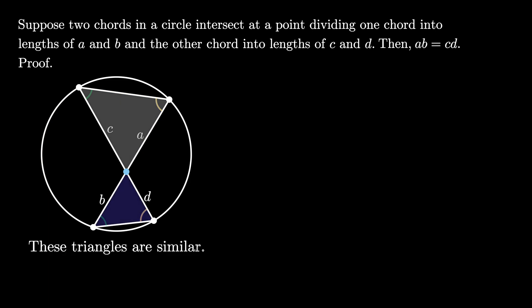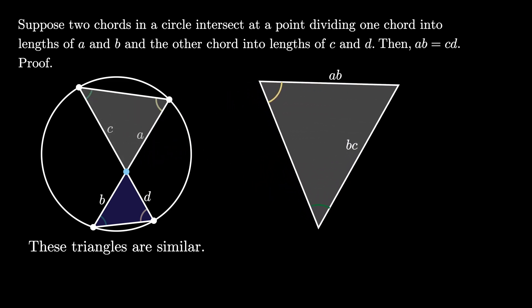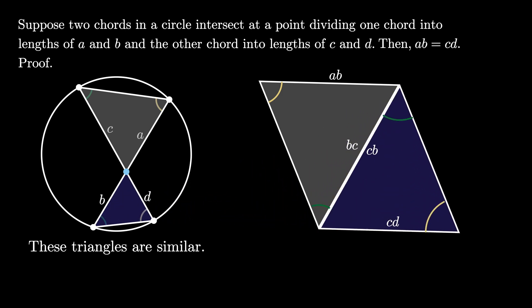But this means that the two pictured triangles that we created are similar. Now we can scale the two picture triangles. The top one we can scale by B, and the bottom one we can scale by C and connect them like this. This construction creates a parallelogram, and therefore the opposite side lengths A times B and C times D must be equal, just as we need for the intersecting chords theorem.